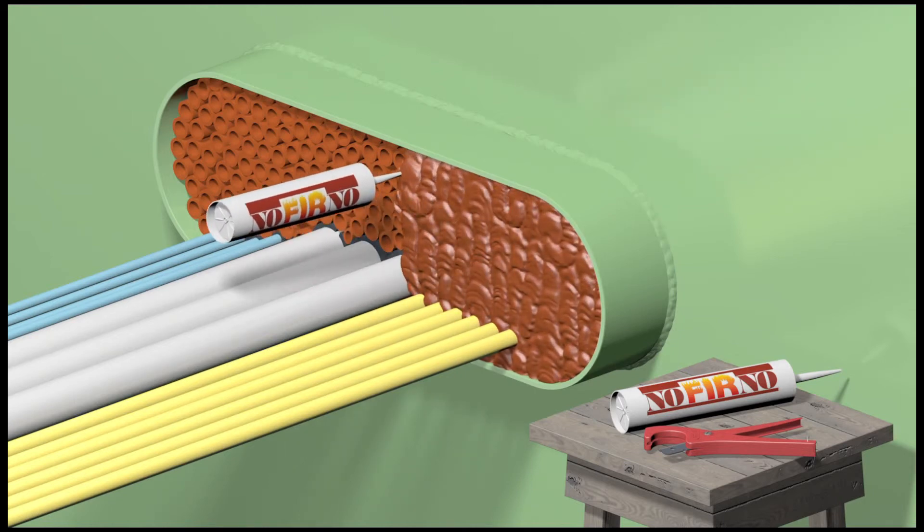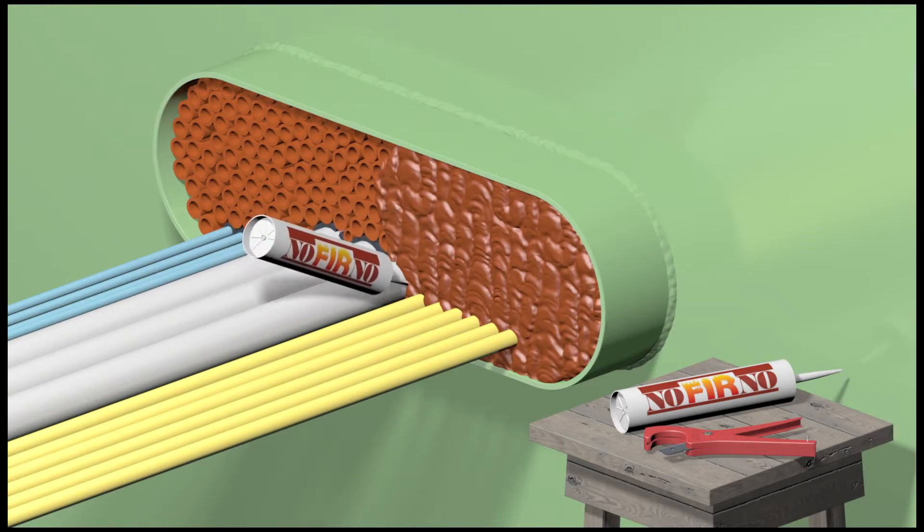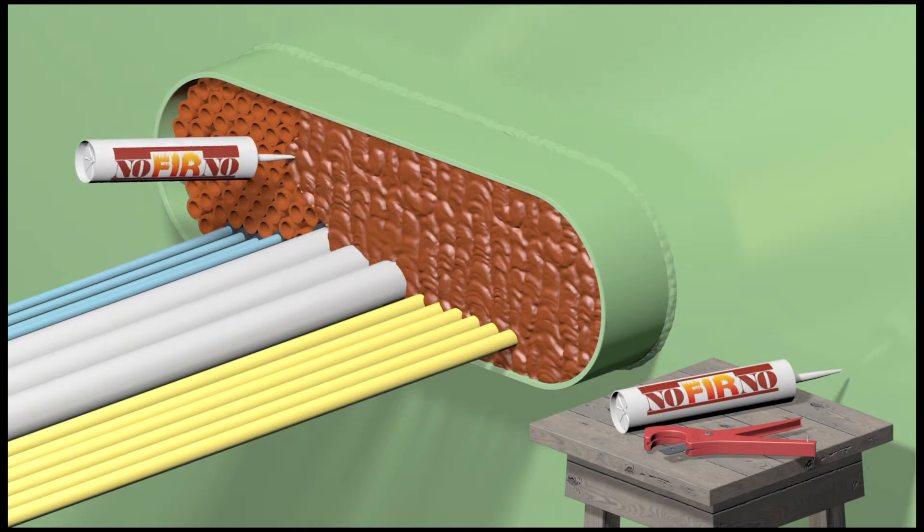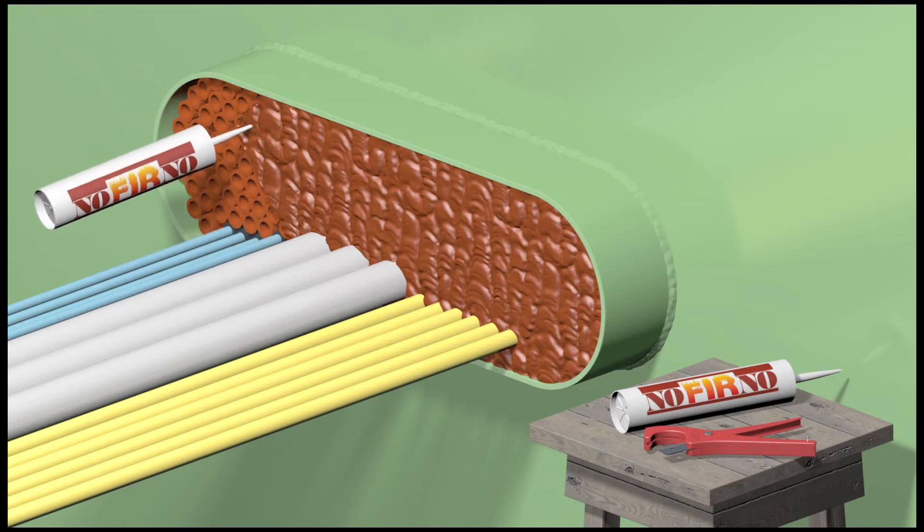A 20 millimeter layer of Noferno sealant is applied at each side of the Noferno multi-cable transit. Skin formation of the sealant takes place after 10 to 15 minutes.